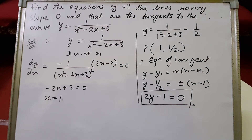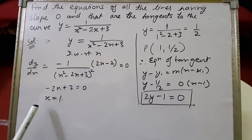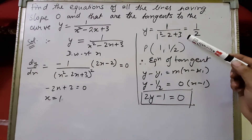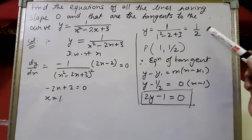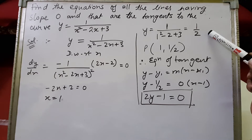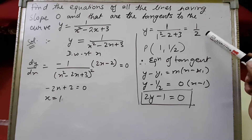Setting the numerator to zero: minus sign distributed gives minus 2x plus 2 equals 0, so the value of x is 1. We then substitute x equals 1 into the equation of the curve to get y equals 1 upon (1 squared minus 2 times 1 plus 3), which gives 1 upon 2. So the point at which the tangent has slope 0 is (1, 1/2).